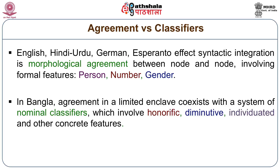In this module, we shall begin by showing you what the dichotomy of agreement and classification is all about, and then looking at phenomena concerning specificity, definiteness, and anti-definiteness. Finally, we shall connect classification to another very closely related phenomenon, which is titularization, that is characteristic of classifier languages.